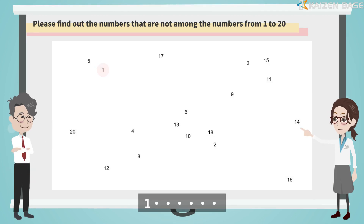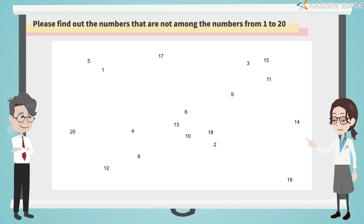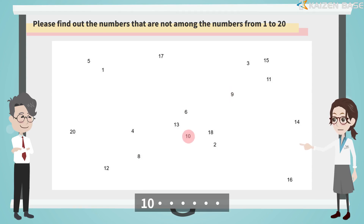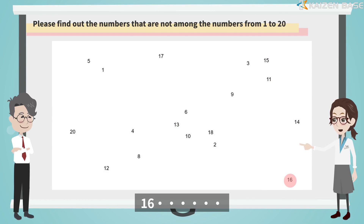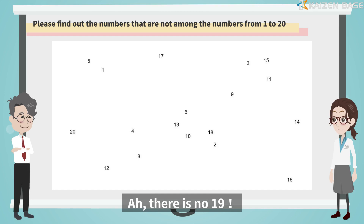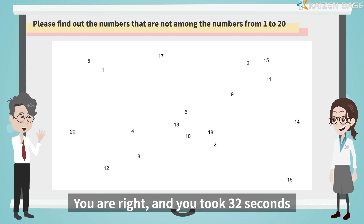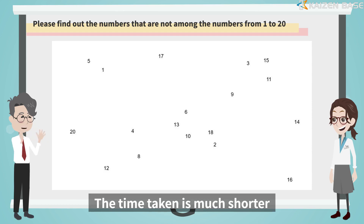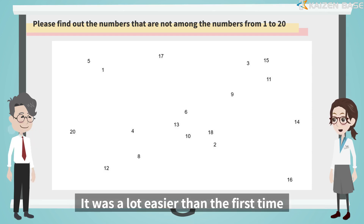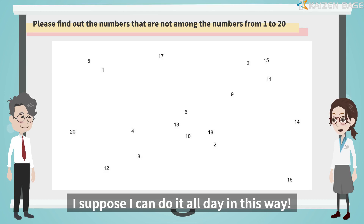1, 2, 3, 4, 5, 6, 7 — there is no 7. 8, 9, 10, 11, 12, 13, 14, 15, 16, 17, 18, 19 — there is no 19. 20. I'm done, the missing numbers are 7 and 19. You are right, and you took 32 seconds. The time taken is much shorter. It was a lot easier than the first time. I suppose I can do it all day in this way.